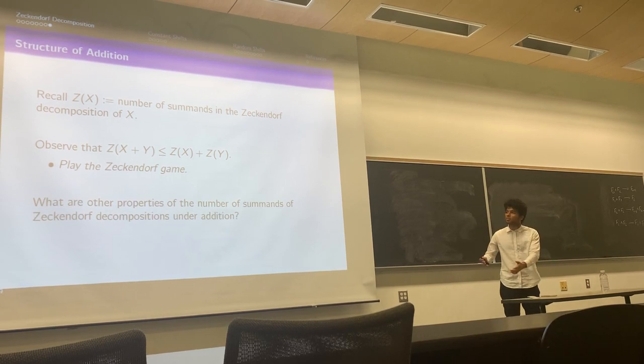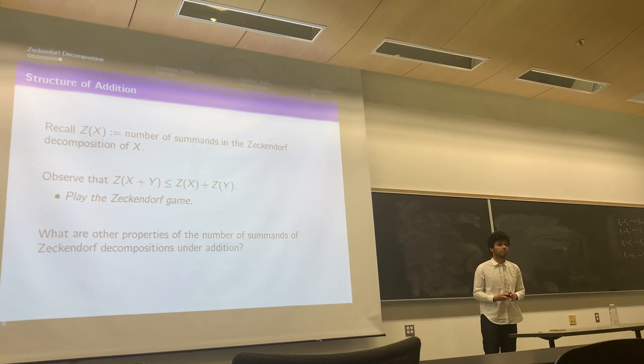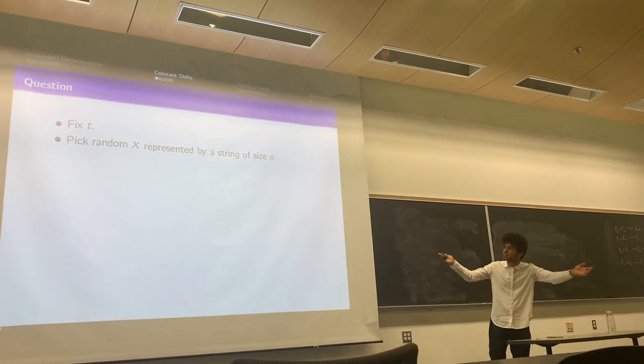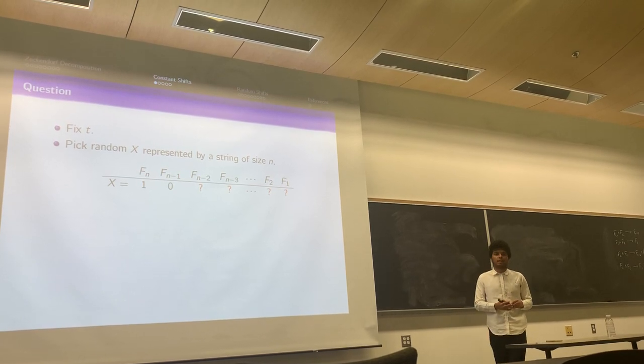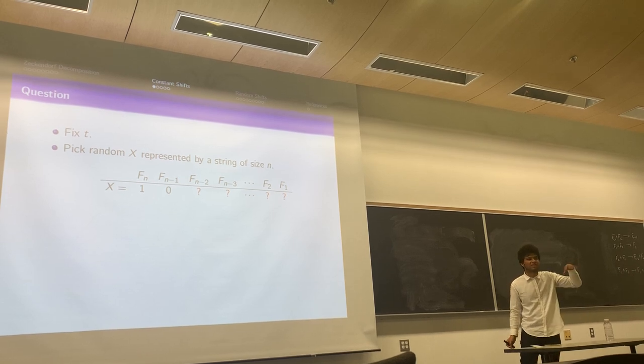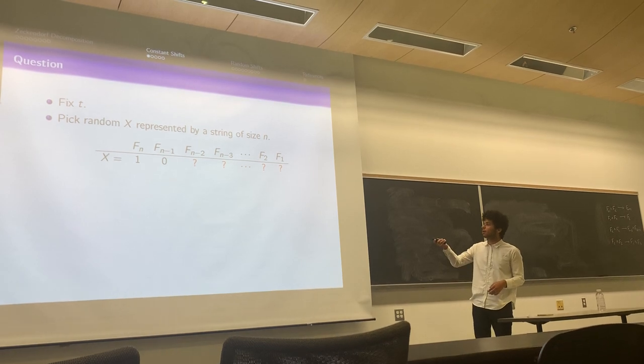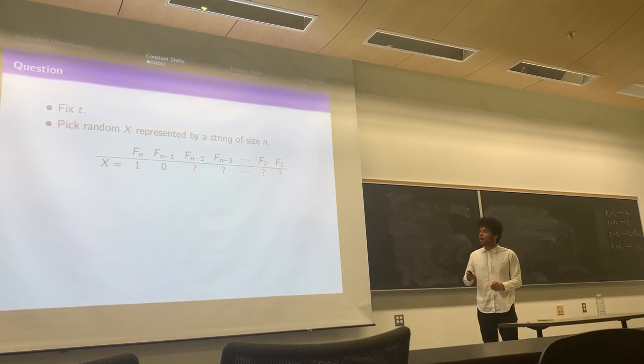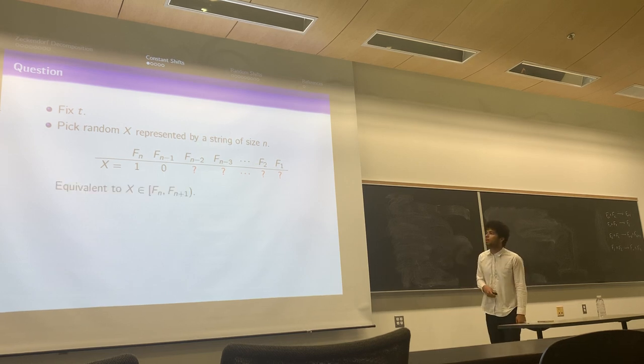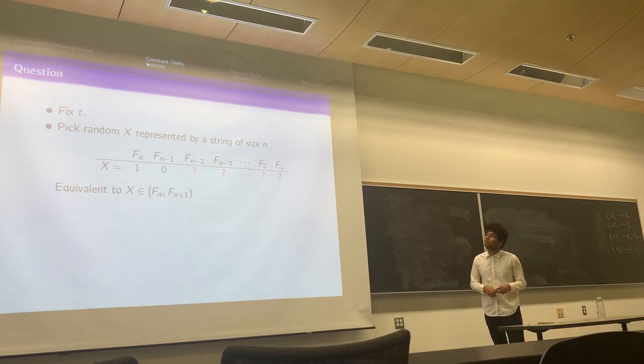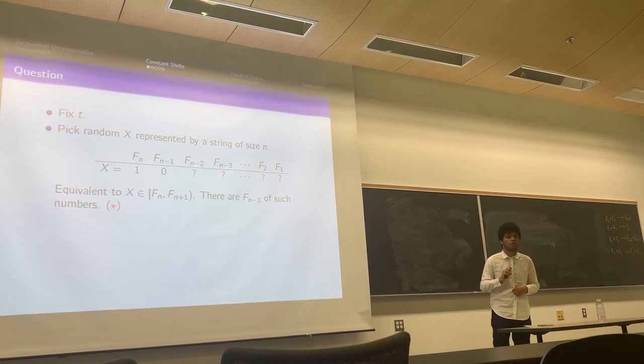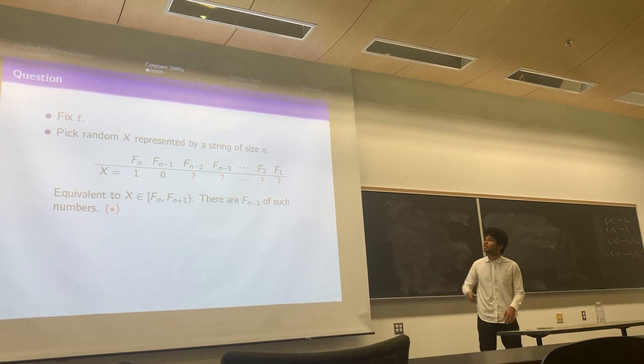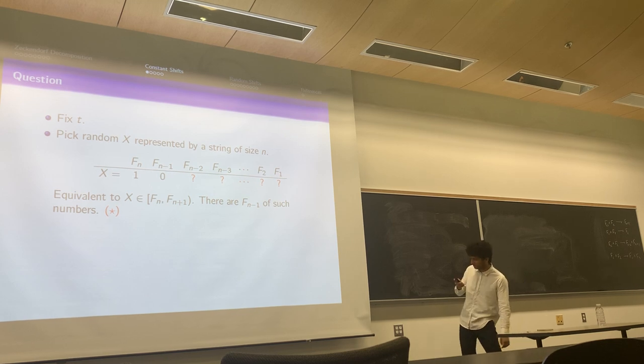The question that we're looking for is, what other properties, other than addition, the number of Zeckendorf summands have? One way to think about the question is by fixing number T and picking a random address represented by a string of size n, just like we pick a number of size that. We're going to require the first number to be one, and that's going to imply the number right before it is going to be zero, because we don't want consecutive ones. The other ones we can choose randomly. This turns out to be equivalent to choosing x between Fₙ and Fₙ₊₁. I want you to notice that there are Fₙ₋₁ of such numbers.